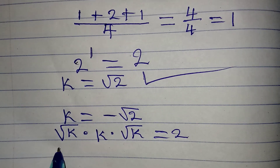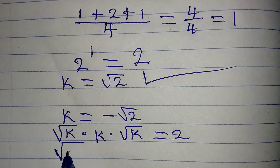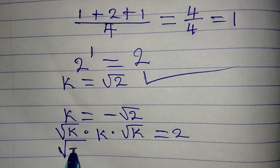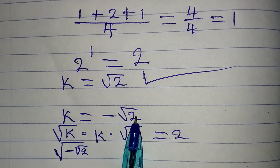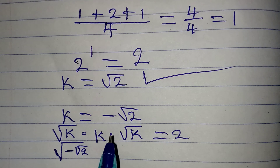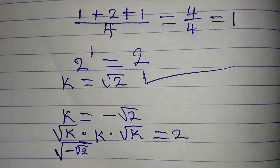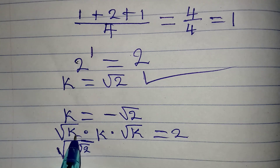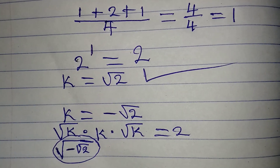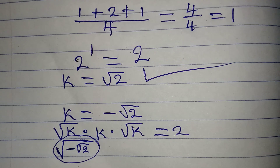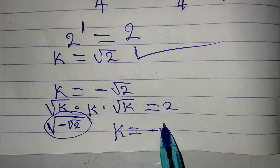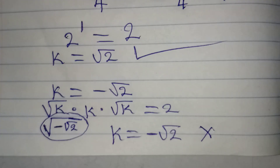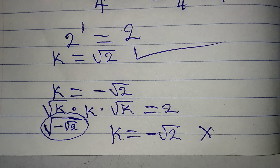We would have the square root of negative square root of 2, because k itself is negative square root of 2. In place of k we write minus square root of 2, and we'd have to find the square root of a negative number, which leads to a complex number. That does not satisfy the given equation. Therefore we conclude that k equal to negative square root of 2 does not satisfy the given equation. Thank you for watching.